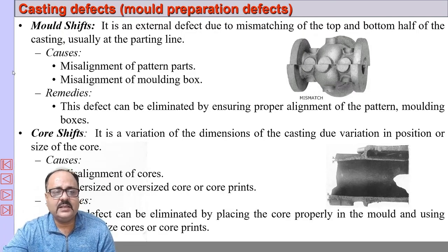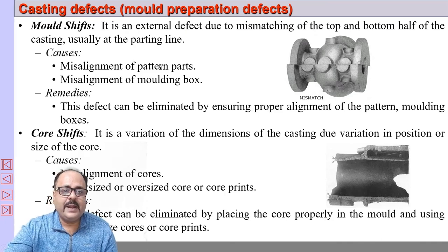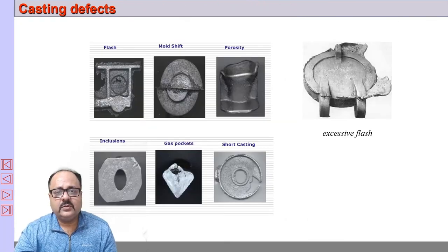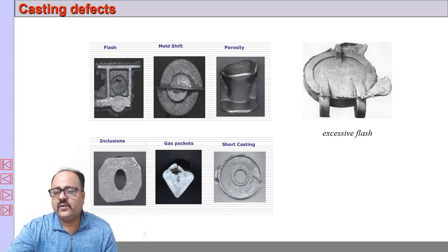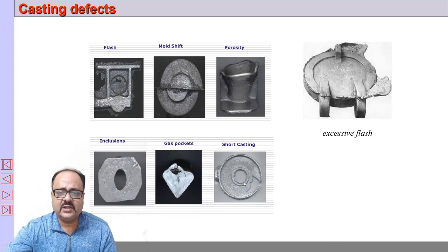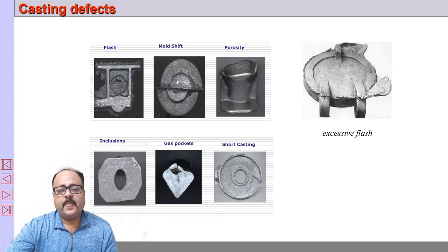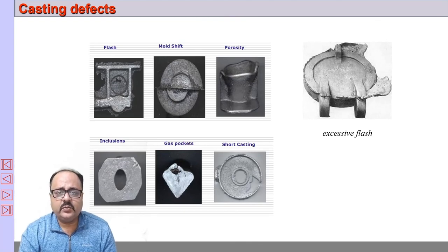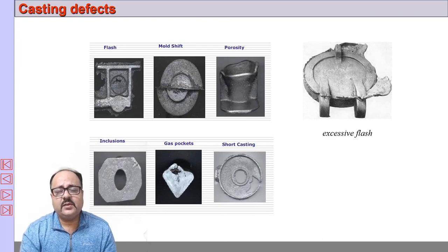Mold shifts: these are fairly straightforward defects. If the cope and drag are not aligned properly, or if the pattern or molding box is misaligned, mold shift defects can occur. If the core is not placed in the right position, core shifts can occur. Flash occurs when proper weight is not placed on the mold and metal escapes — this is also called run out or flash. We have now discussed various types of casting defects. If you have any doubts, please feel free to write in the comment box or contact me. Thank you for watching.